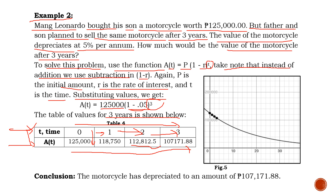To visualize this, we use a Cartesian plane. As you can see, the graph moves downward. Starting from here going to year three, the movement of this graph from upward to downward shows it is a decreasing function — when your t increases, your amount with respect to t automatically decreases. So the motorcycle has depreciated to an amount of 107,171.88 pesos after three years, which is what Mang Leonardo would receive if he decided to sell it.